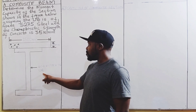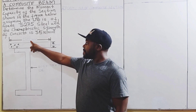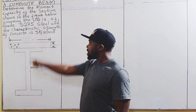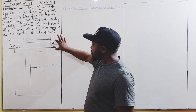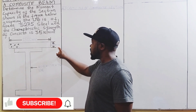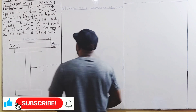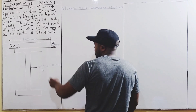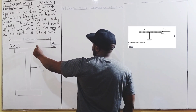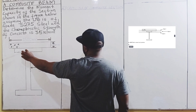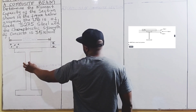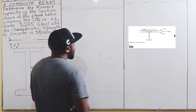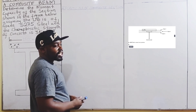The effective breadth of the concrete flange is 1500 millimeters and the depth of the concrete flange is 130 millimeters. We are going to begin by determining the position of the neutral axis — whether it falls in the concrete flange, the steel flange, or the steel web — by calculating the resistance of the concrete flange.